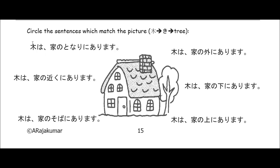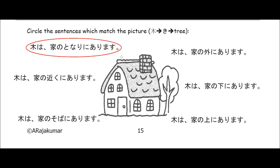Ki wa — as for the tree — ie no tonari. That's our location: ie no tonari. Tonari means next to, and no we translate as of, ie means house. So next to of the house, in other words, next to the house. Ni — there's our location particle, that's where it is — arimasu. So ki wa, the tree, ni arimasu, it exists or it is next to the house. Is that correct? Yes, it is. So that one should have a circle around it in your book.